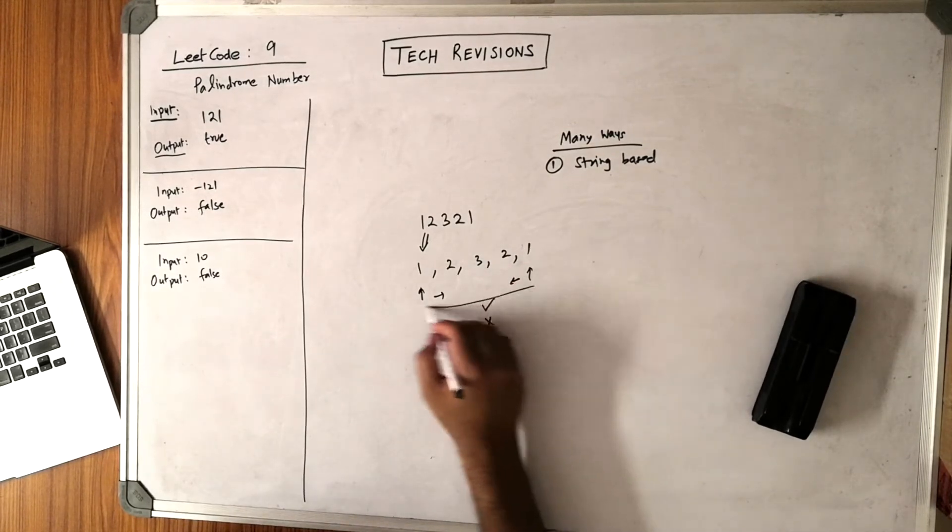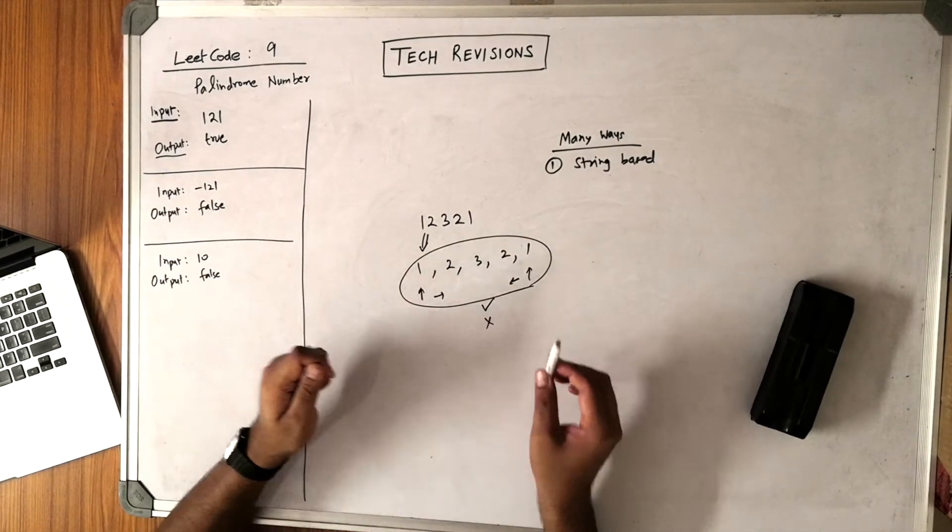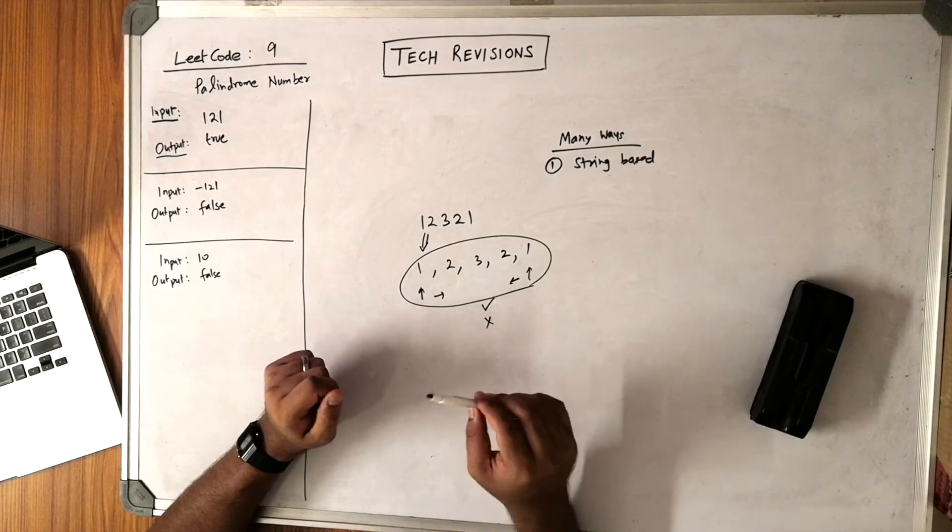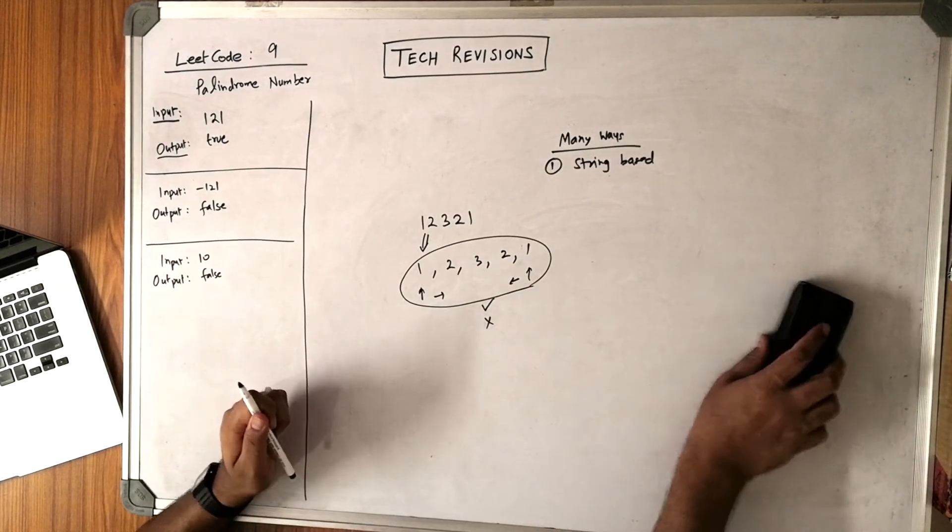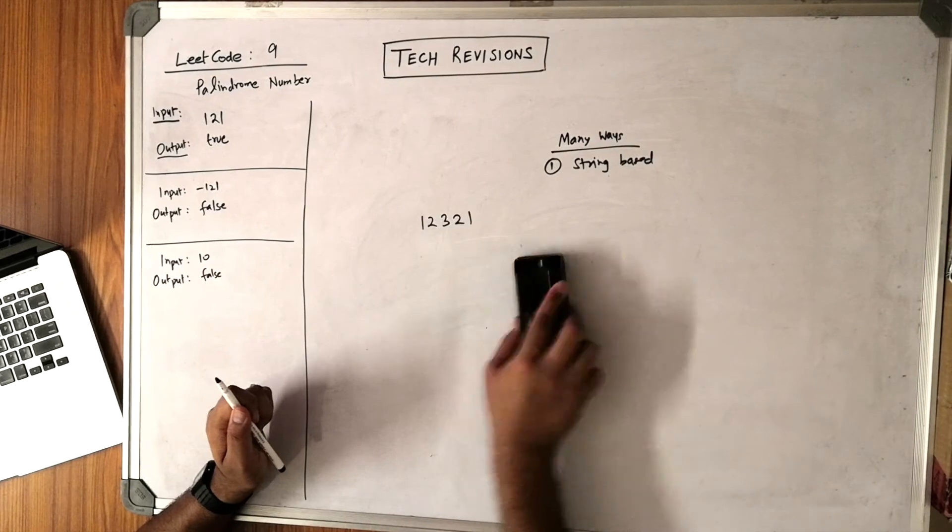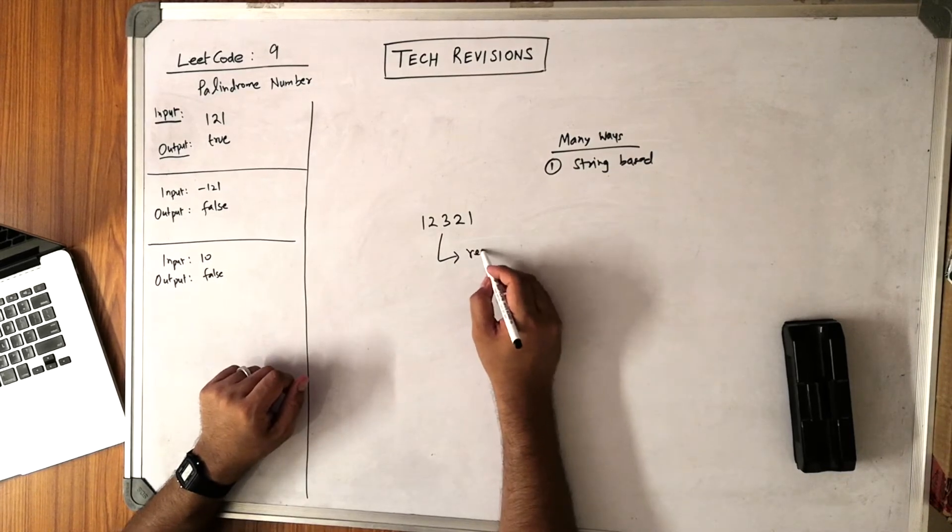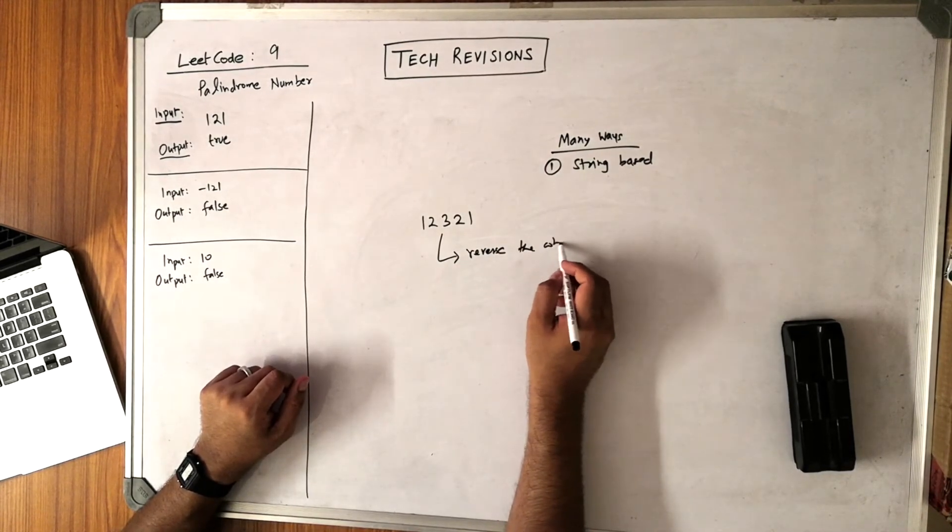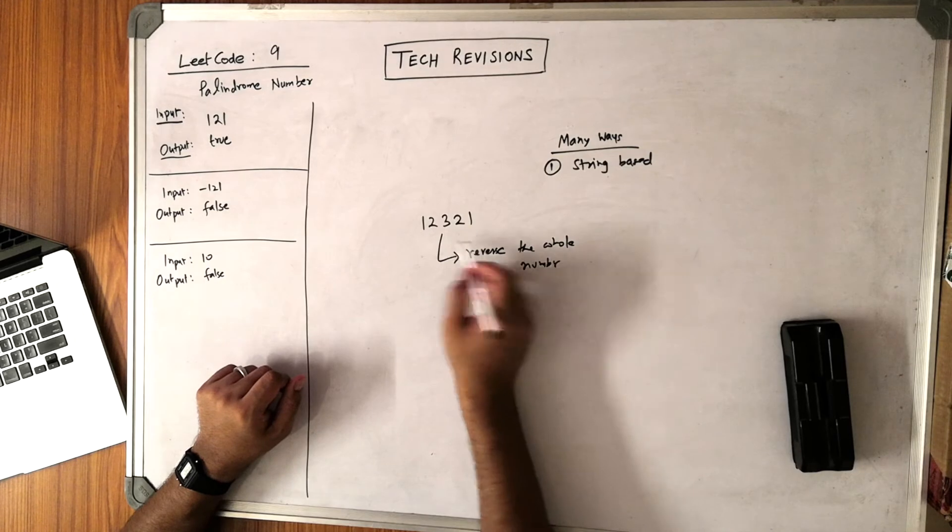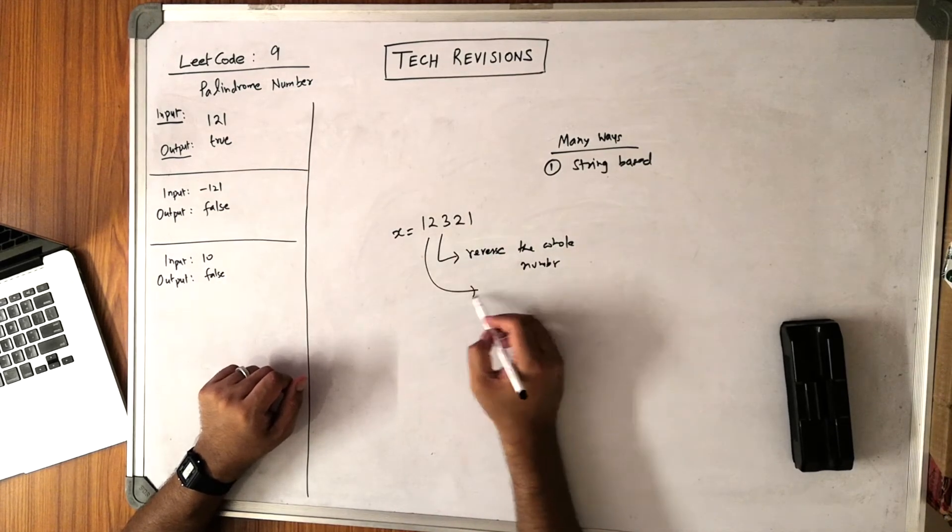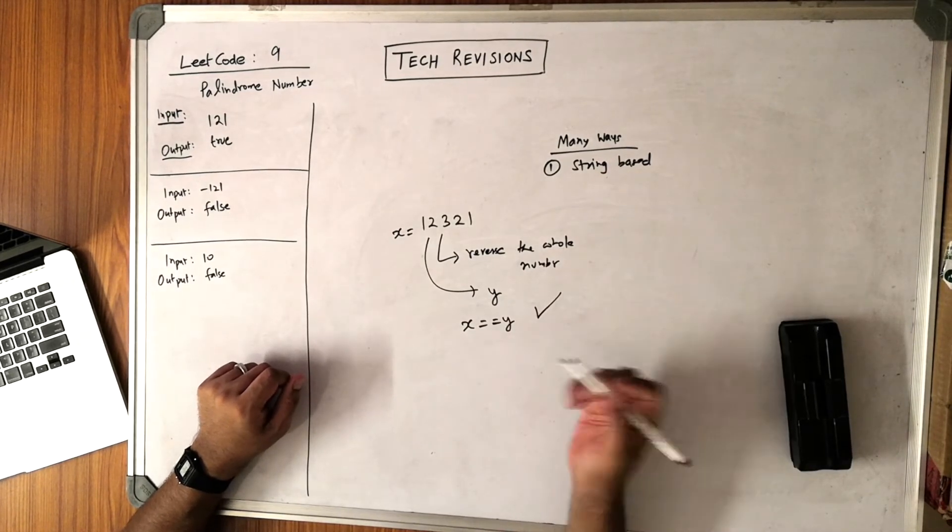This will be slightly complicated because you have to put two pointers and then keep advancing one side and keep reducing the index of the other pointer. The most basic thing you can do immediately is reverse the whole number. Instead of putting two pointers and comparing them, reverse the whole number. Once you have reversed it, suppose x was your initial number and after reversal you get y. If x equals y, then it is a palindrome, otherwise it is not.